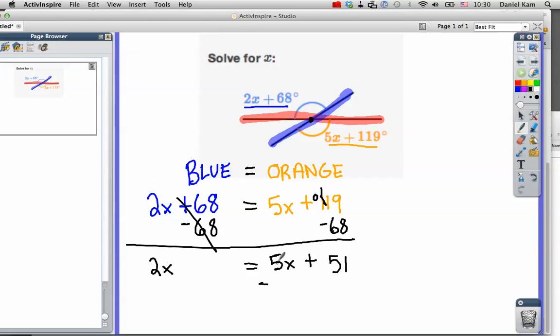Now we have to get all the x's over to this side. So we subtract 5x from both sides. It's going to equal negative 3x equals 51.